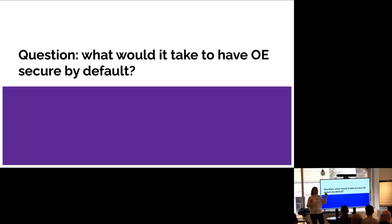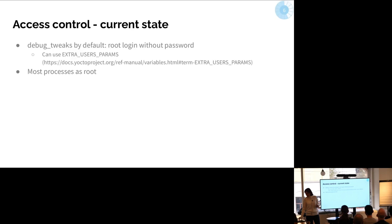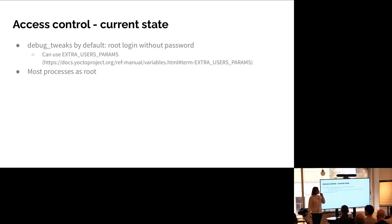I have my three situations and we can discuss solutions. The first one: access control. What is the current state? The current state is that we have debug tweaks by default, so you have a root login without password. You can use extra user configuration, but you have to use it in your recipes, and most processes are running as root.